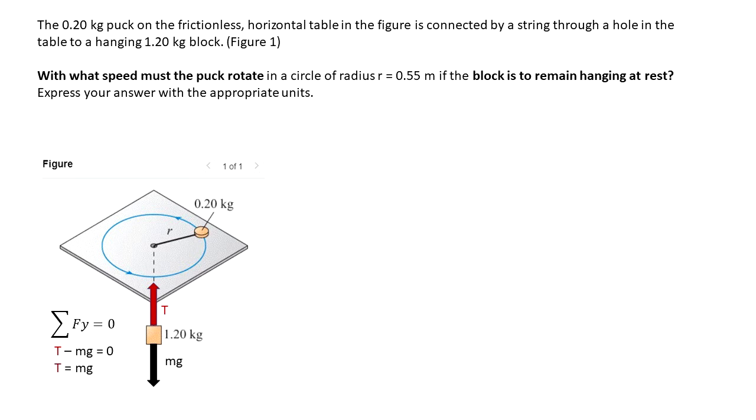We have T minus mg is equal to 0 and T is equal to mg. We know that 1.2 kg times 9.8 meters per second squared will give us the tension. Tension is 11.76 newtons.